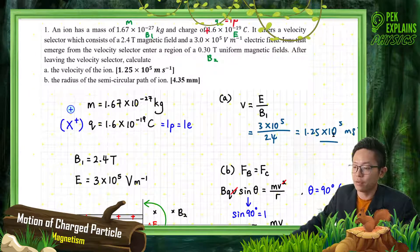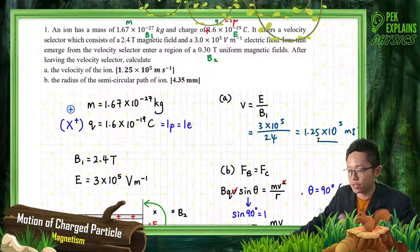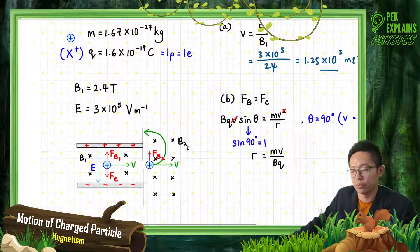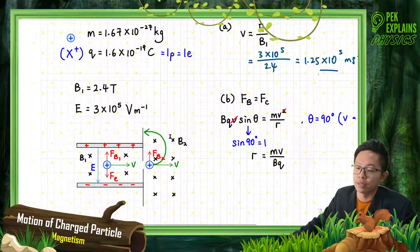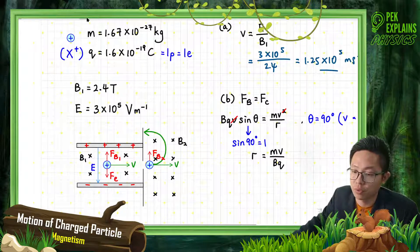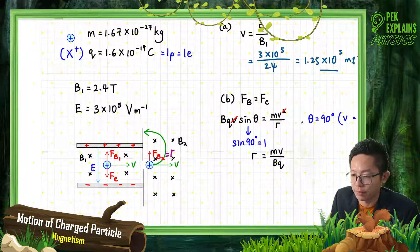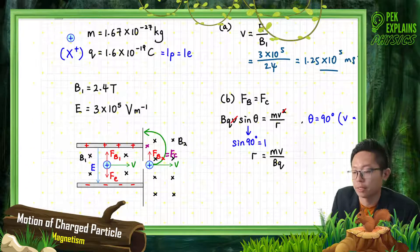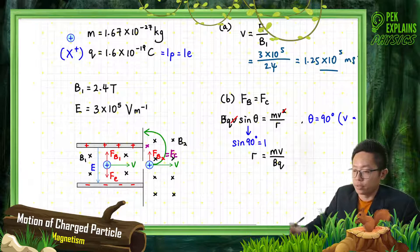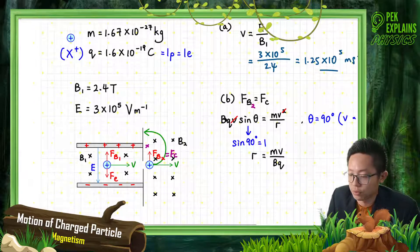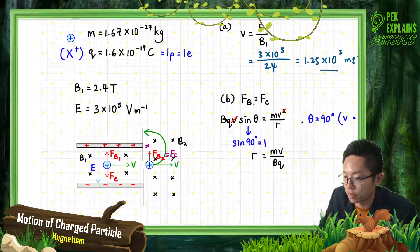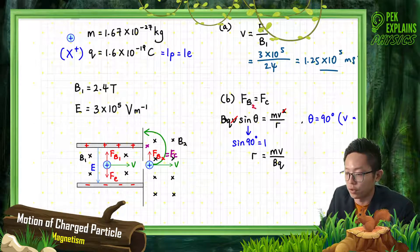Now this particle with this velocity will go to the other region of magnetic field, enter the B2. So here there's only one force, which is the magnetic force. There's no more electric force because no more parallel plate. So only has one magnetic force, and this magnetic force will eventually become the centripetal force.